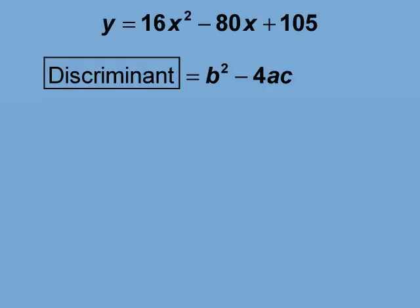Let's input the a and b values into the discriminant formula. The b value of minus 80 goes here. The a value of 16 goes here. Let's leave c as a variable because we want to know what c value gives us a discriminant of 0.